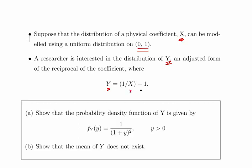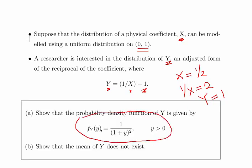So Y equals 1 over X minus 1. So if X is equal to, let's say 1 half, 1 over X is equal to 2 and therefore Y would equal 2 minus 1 which would be 1. We have to show that the probability density function of Y is given as follows, and show that the mean of Y does not exist.